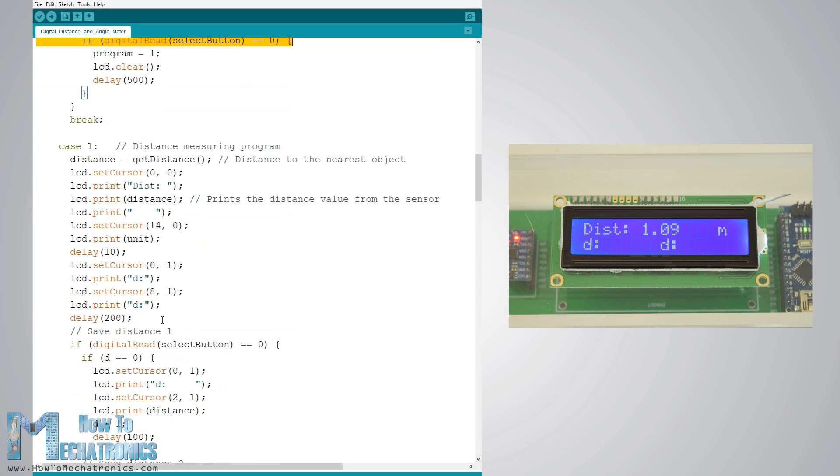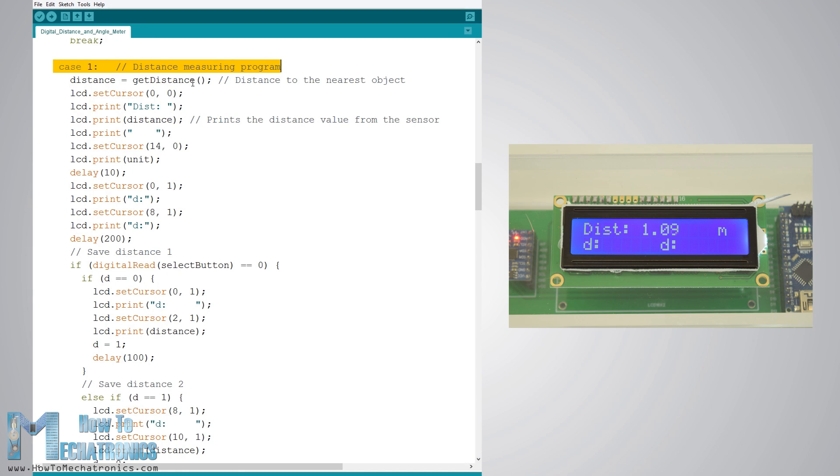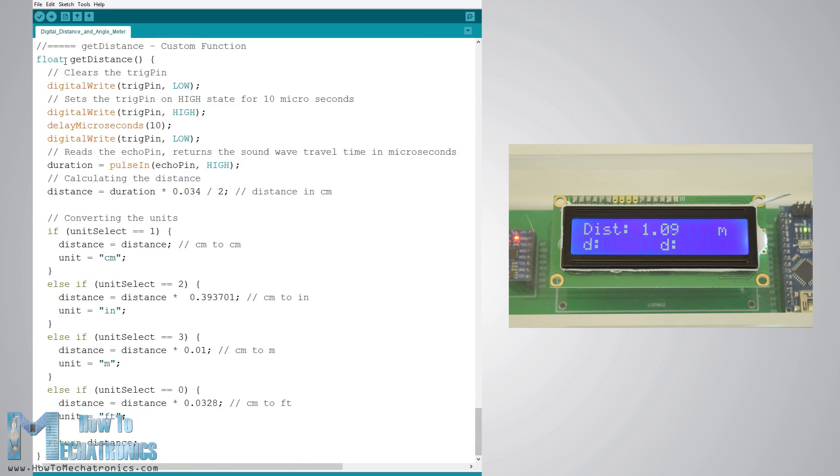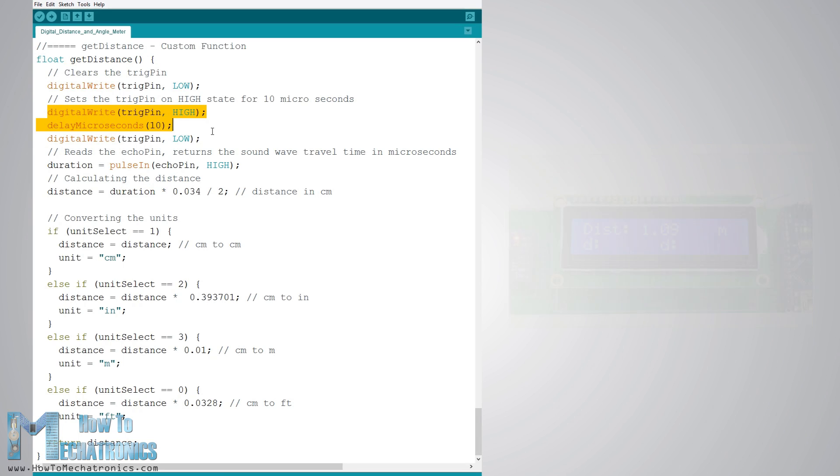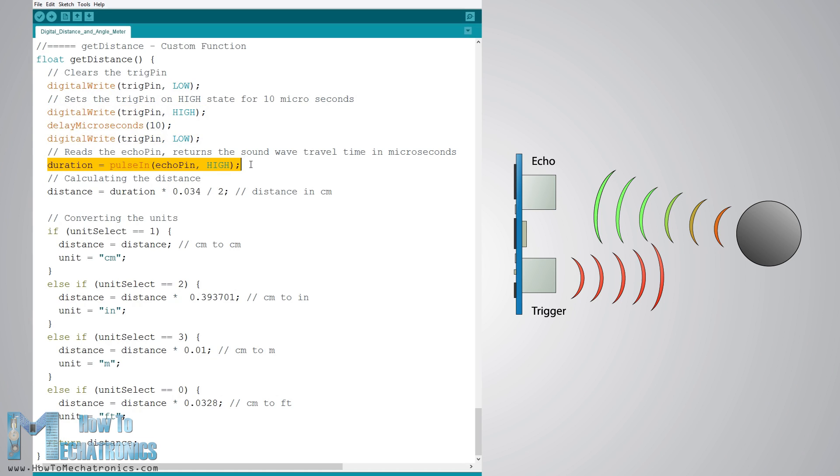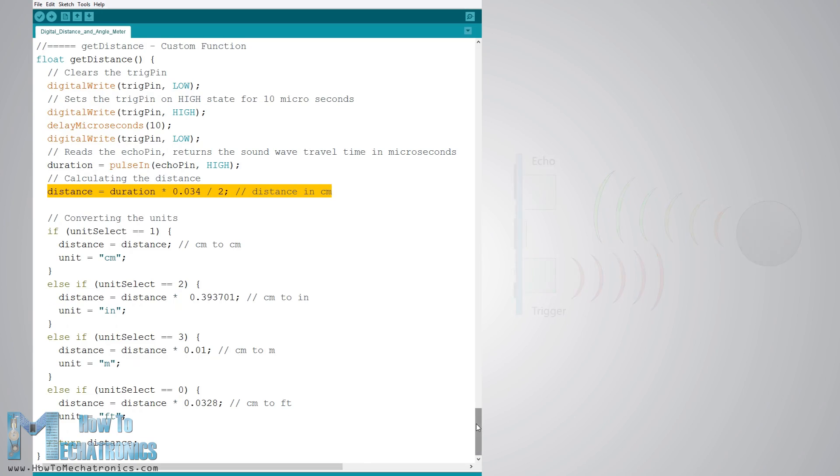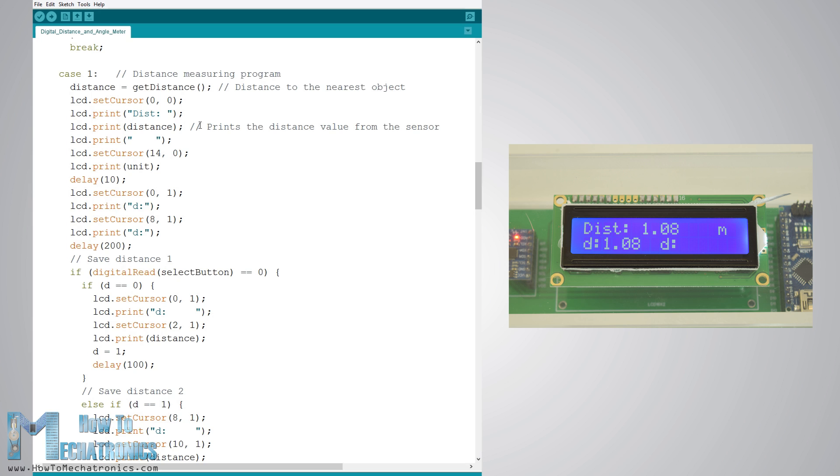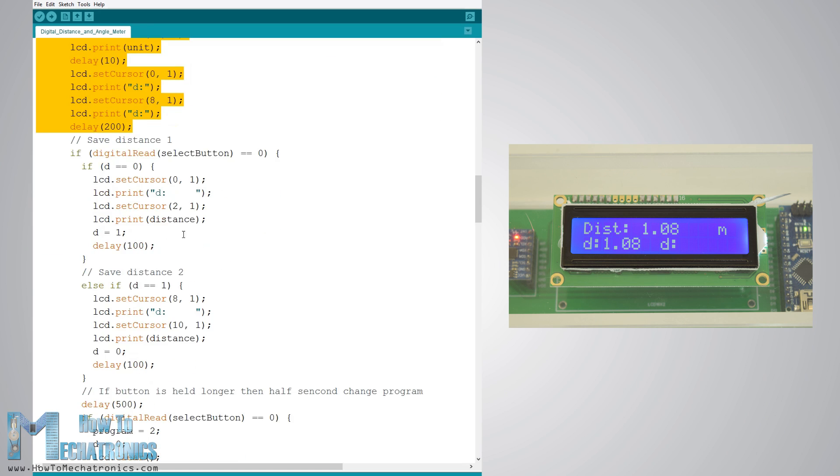In case number 1, or in the distance measuring program, first we get the distance to the nearest object using the getDistanceCustom function. Let's see how this function works. Here using the trigger pin we tell the sensor to generate an ultrasonic sound wave. Then using the echo pin and the pulseIn function we measure the duration the wave traveled from the sensor to the object and back. Considering the speed of sound and the travel time we can easily calculate the distance. So we print the measured distance along with some text on the LCD and using the if statements, if we press the button, we print or save the last two measurements.